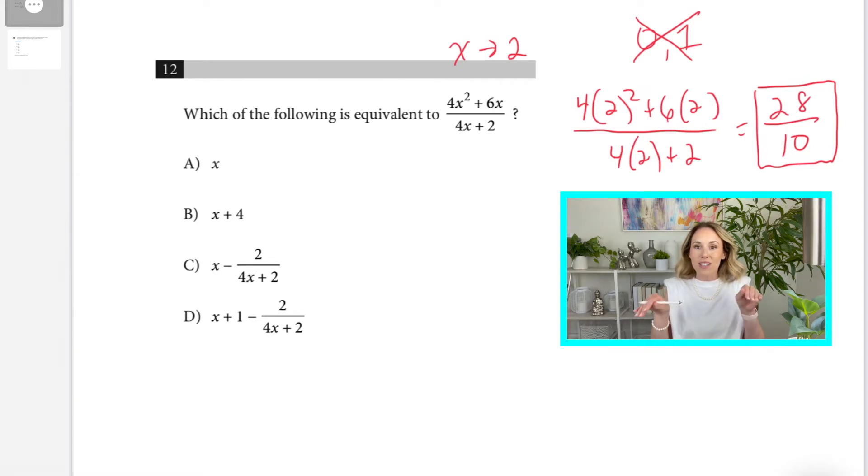The one that matches, the 28 tenths, is an equivalent expression. We know it's not A and B, so I'm going to cross those off. We don't even get a fraction with A and B. My suggestion is start with D because typically on these problems, they like to bury the answer at the bottom. So, you'll save time if you start with D and work your way up. We'll substitute 2 in for x.